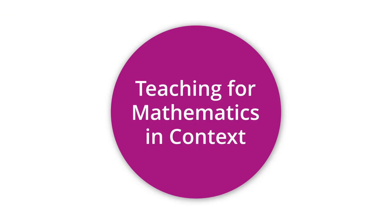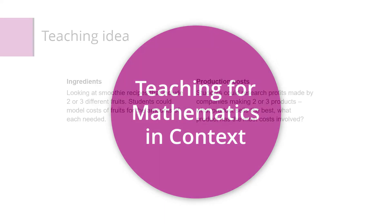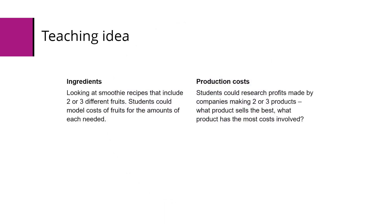So how can we teach this particular topic? Some ideas: we can look at smoothie recipes that include two or three different fruits. They can model the cost of fruits and the amounts for each needed and work out the best way to make a profit.